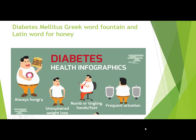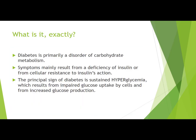We're back to talk about endocrine diseases, starting with diabetes mellitus. Diabetes mellitus comes from the Greek word for fountain and the Latin word for honey. Some symptoms to look out for include hunger, unexplained weight loss, numbness or tingling in the hands and feet, and of course frequent urination or polyuria.